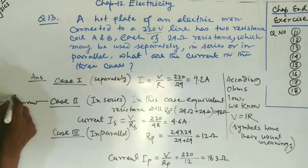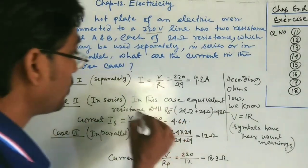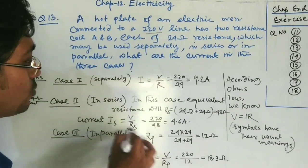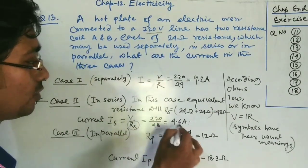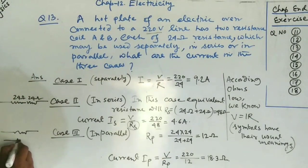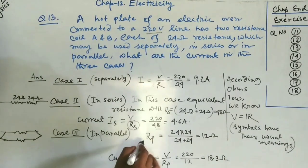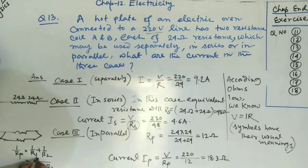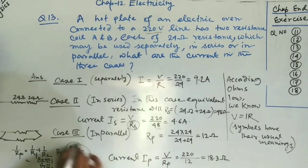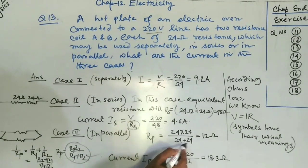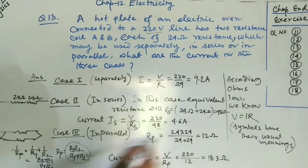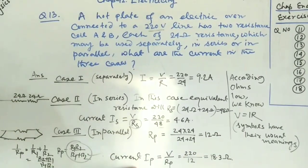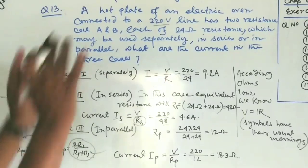For the series case: Rs = 24 + 24 = 48 ohm, so current I = 220/48 = 4.6 ampere. For the parallel case: Rp = (R1 × R2)/(R1 + R2) = (24 × 24)/(24 + 24) = 576/48 = 12 ohm. Current Ip = V/Rp = 220/12 = 18.3 ampere. These are the three answers for question 13.